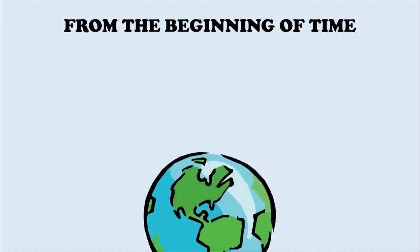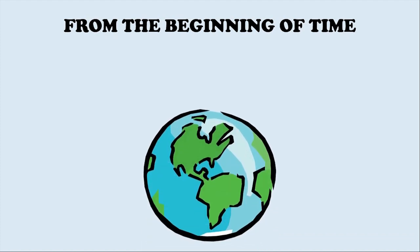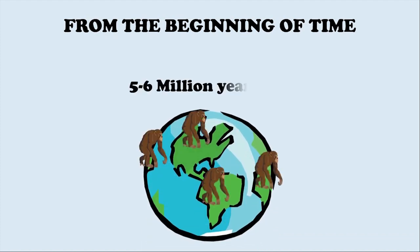In this video, we will be talking about the beginning of human life on Earth. According to scientific studies, human beings are a product of an evolutionary process. The first human-like creatures appeared on the surface of the Earth around 5 to 6 million years ago.